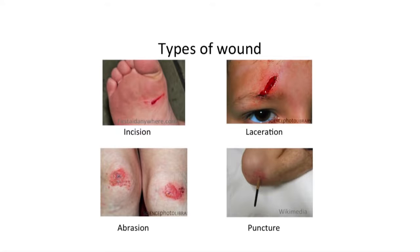A wound is a break in the epidermis or dermis. There are many types of wound. Common examples include incisions, which are caused by sharp objects; lacerations caused by blunt force; abrasions caused by superficial damage to the epidermis only; and puncture wounds where the depth of the wound exceeds the length or width.